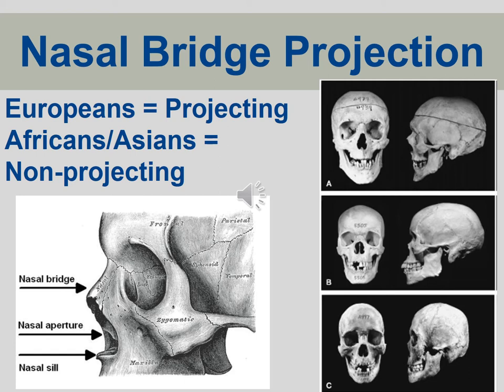Look at the skulls on the right — you have A, B, and C. Which one has the greatest nasal bridge projection in the anterior view? If you guessed A, you're correct. B and C do not have any nasal projection, or it's very weak. B is actually an individual with African heritage and C is an individual with Asian heritage. You can see that by nasal bridge alone it's very distinguishable which individual has European or Euro-American ancestry; you have to use some of the other features to distinguish B and C.